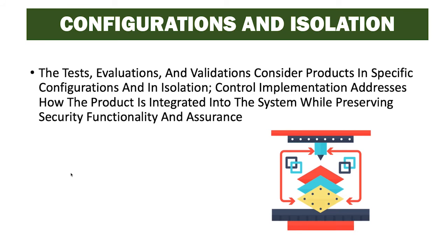Tests, evaluations, and validations consider products in specific configurations and also in isolation. Control implementation addresses how the product is integrated into the system while preserving the security, functionality, and assurance. We want to look at the product both in isolation and in the specific configuration as we're implementing it in our system, helping to preserve the security functionality and the assurance level we're required to have.